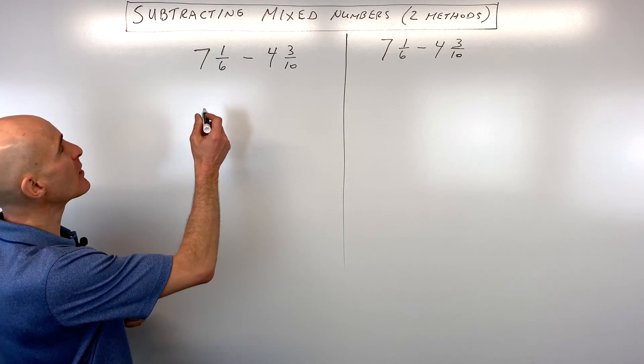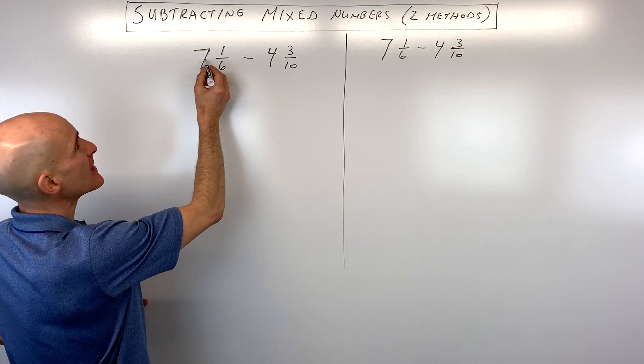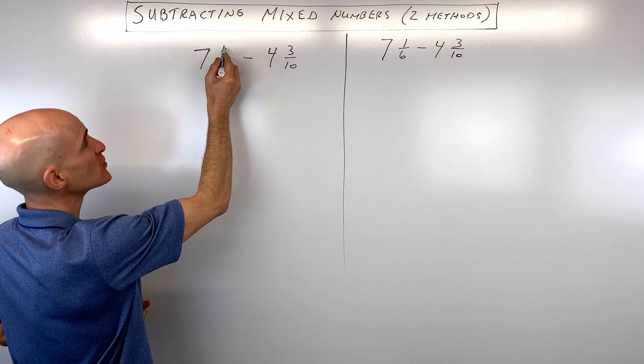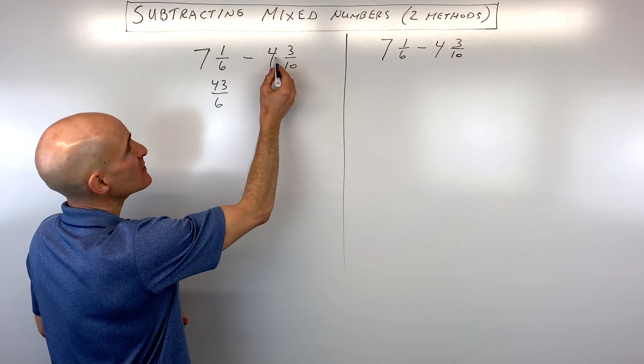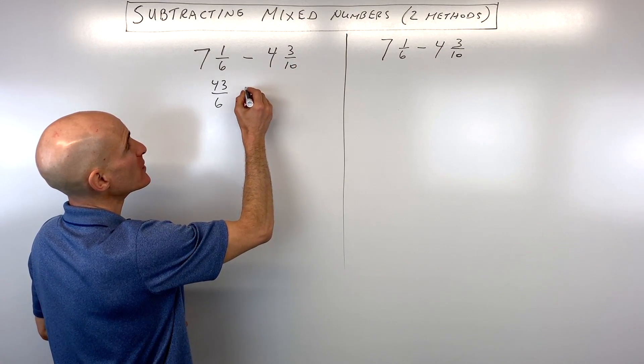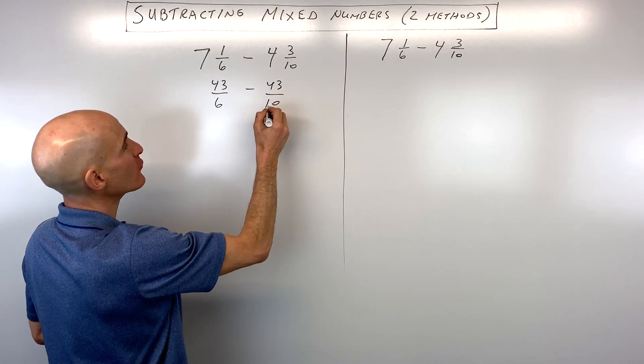Let's see if we can take a look at this. The first thing I would do is I would say 6 times 7 is 42, plus 1 is 43 over 6. For this one, 10 times 4 is 40, plus 3 is 43, so that's 43 over 10.